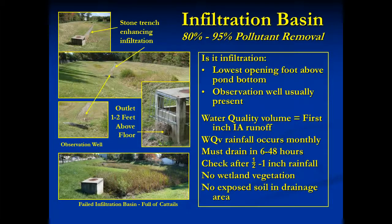Infiltration basins look a lot like a dry or extended detention pond. To tell the difference, look for observation wells, or a stone trench on the floor of the basin bottom which penetrates down into permeable soils. Also, the first point where runoff can exit will be at least a foot or two above the pond bottom. Over time, fine particles may accumulate on the basin floor, sealing the surface. These areas then hold water for longer periods and eventually wetland vegetation may grow in them. These clogged soils should be scraped away to restore infiltration.